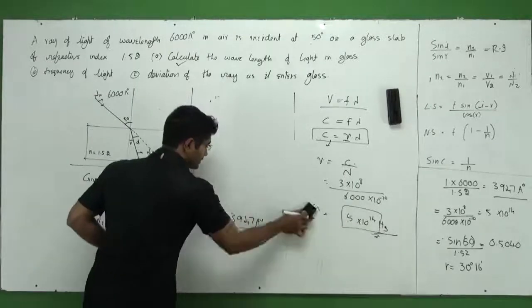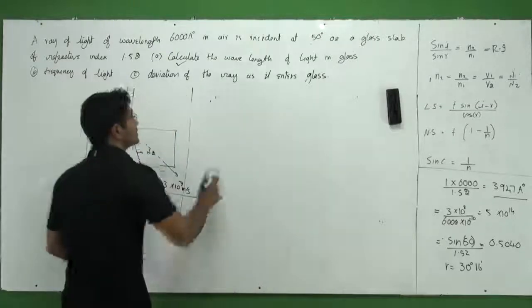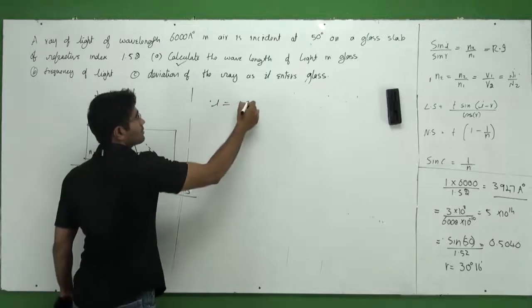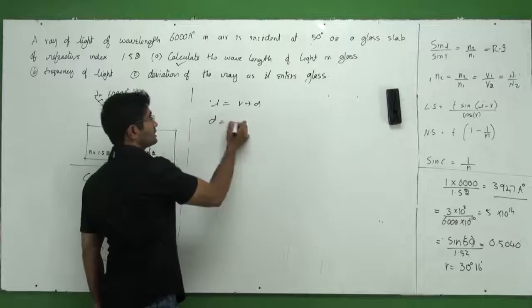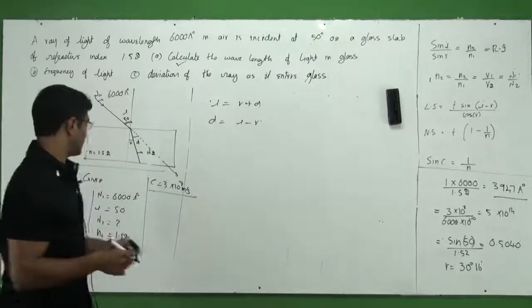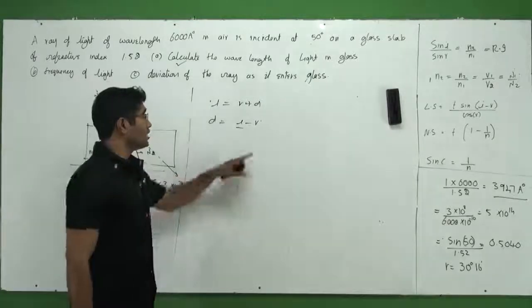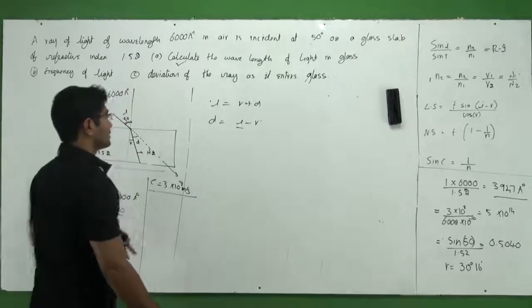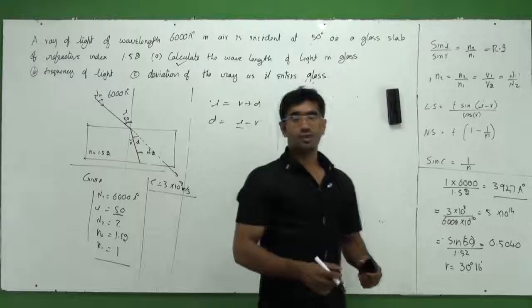Let me erase this for you. In this case, you can see that if I take this value i, i is equal to r plus d. We did this in the previous problem also. Right, d here can be given as i minus r. So now I need to know what is the value of r. From the given data, I know i. So I know i is 50. But what is r? I don't have the value of r.